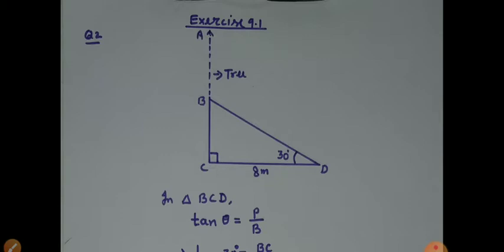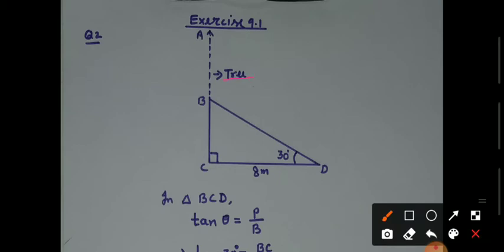Now I will explain the question from the diagram. This AB is the tree. From the edge this tree is bent towards the ground. The top of the tree is at point D. It makes a 30 degree angle with the ground, and the distance where the tree touches is 8 meters.